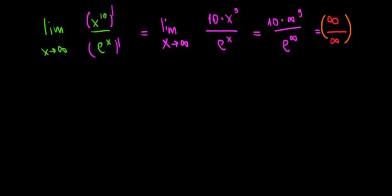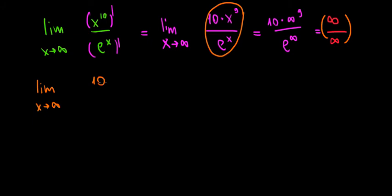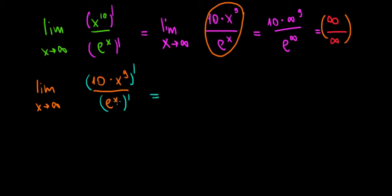We're differentiating the last step we got. That was our previous attempt — now let's apply L'Hôpital's rule again and differentiate 10 times x to the power of 9 over e to the power of x. Keep in mind, I used to make this mistake a lot: don't take the derivative of the entire fraction — make sure you take the derivative of the numerator and then the denominator separately.